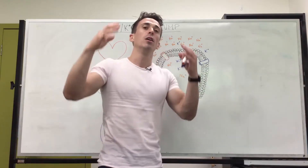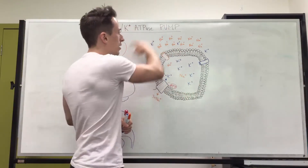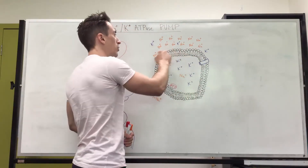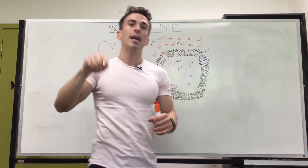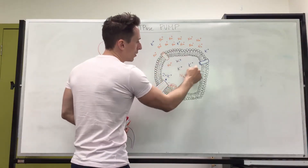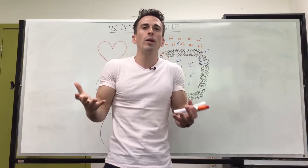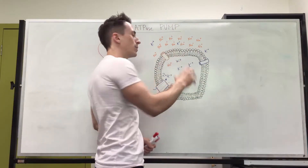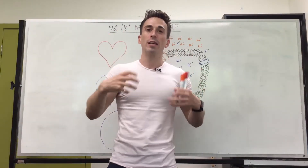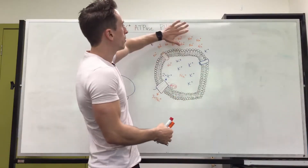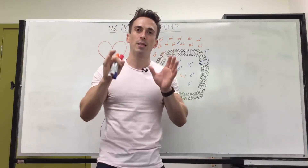If we look at the cations, the most abundant cation that sits outside the cell is sodium — you can see all this sodium sitting outside the cell here. The most abundant intracellular cation is potassium — you can see all the potassium sitting inside the cell here. You may be wondering why we need to know this difference: all the sodium outside, all the potassium inside. The second thing is how does this concentration gradient get established? How does all the sodium get outside and all the potassium get inside? This is where we start talking about the sodium potassium ATPase pump.